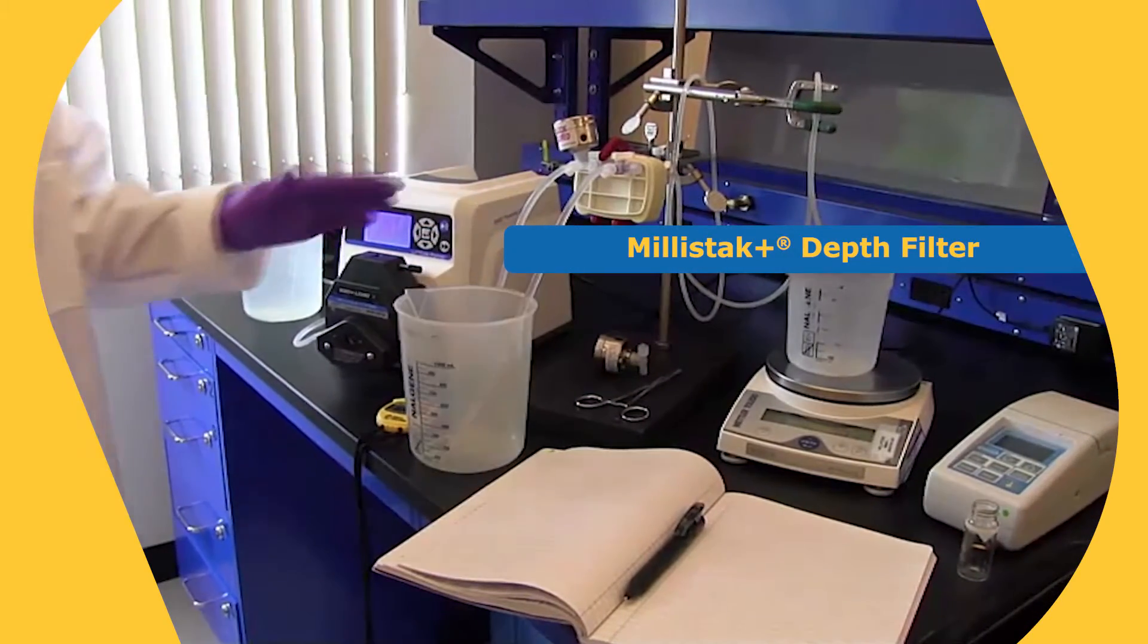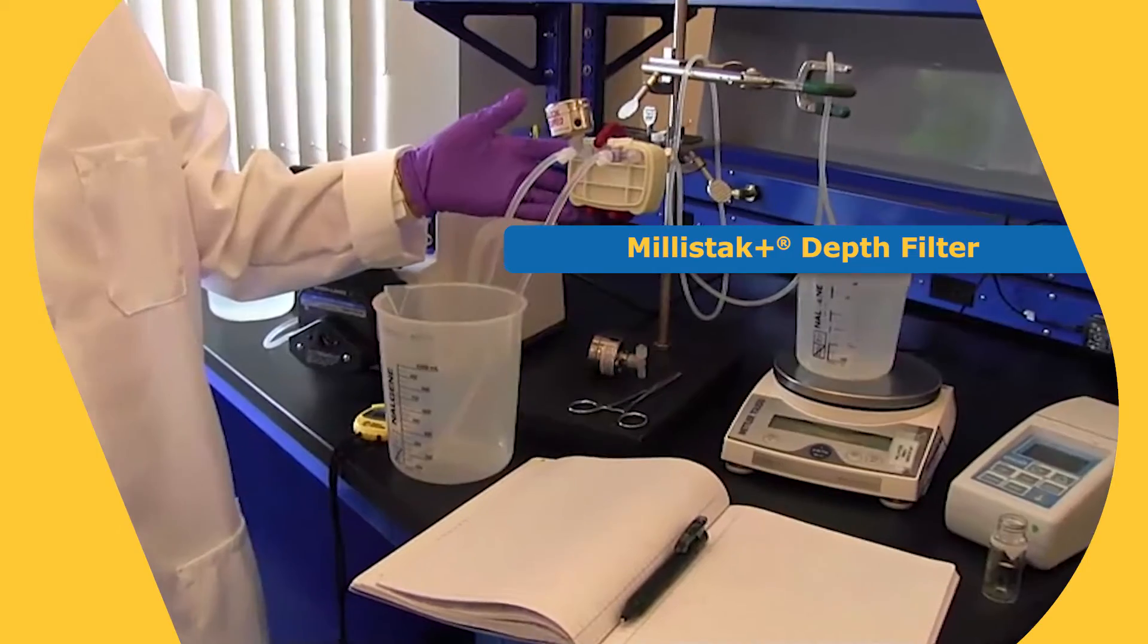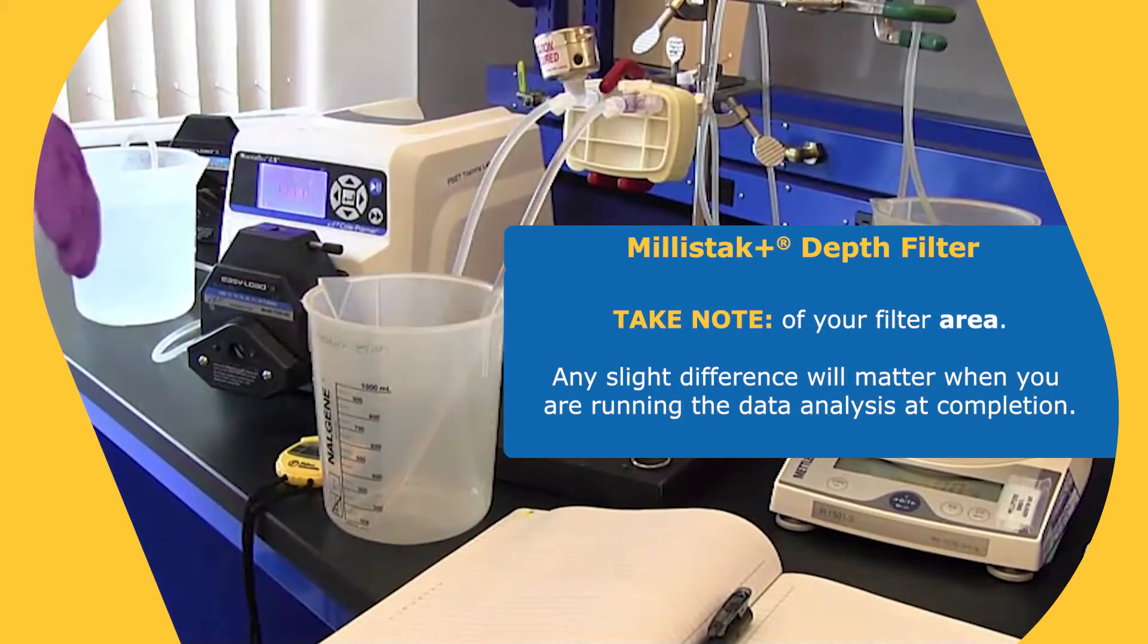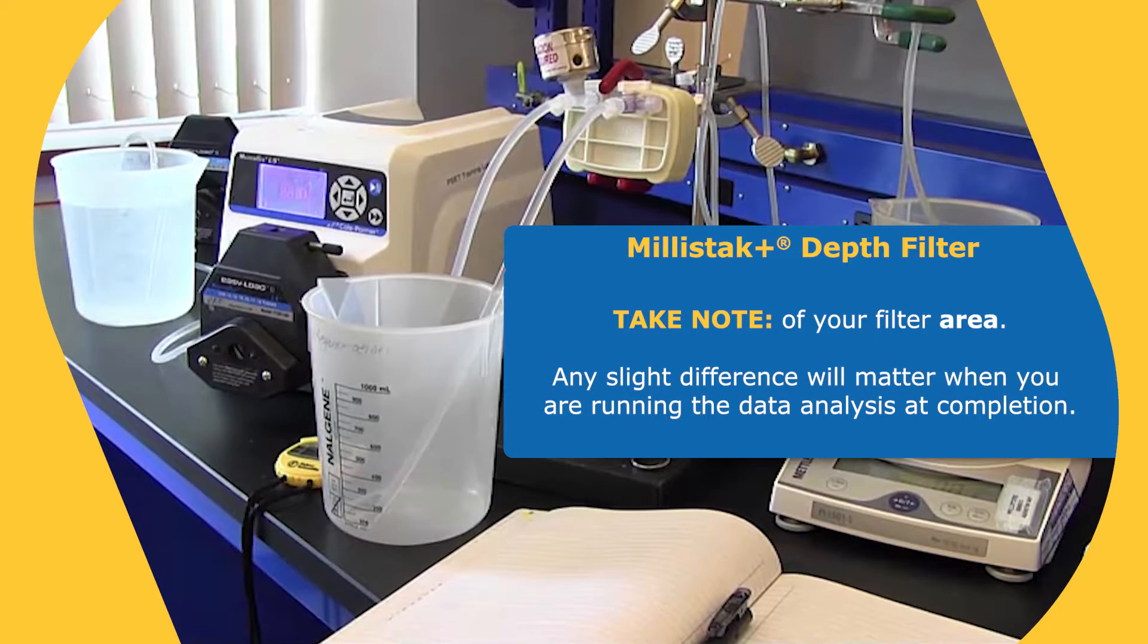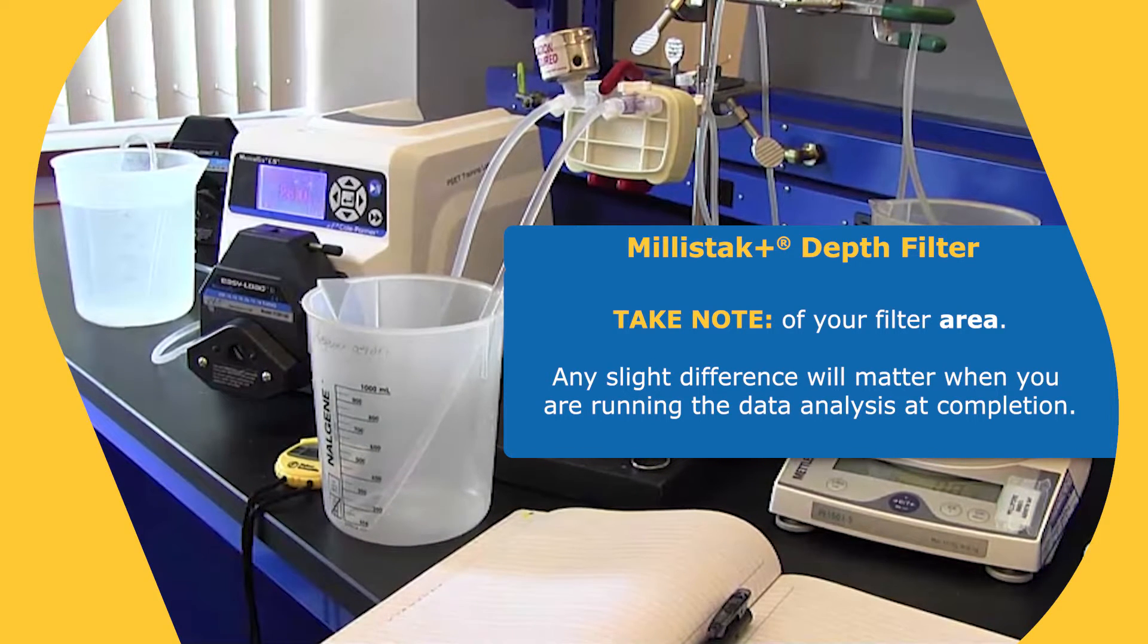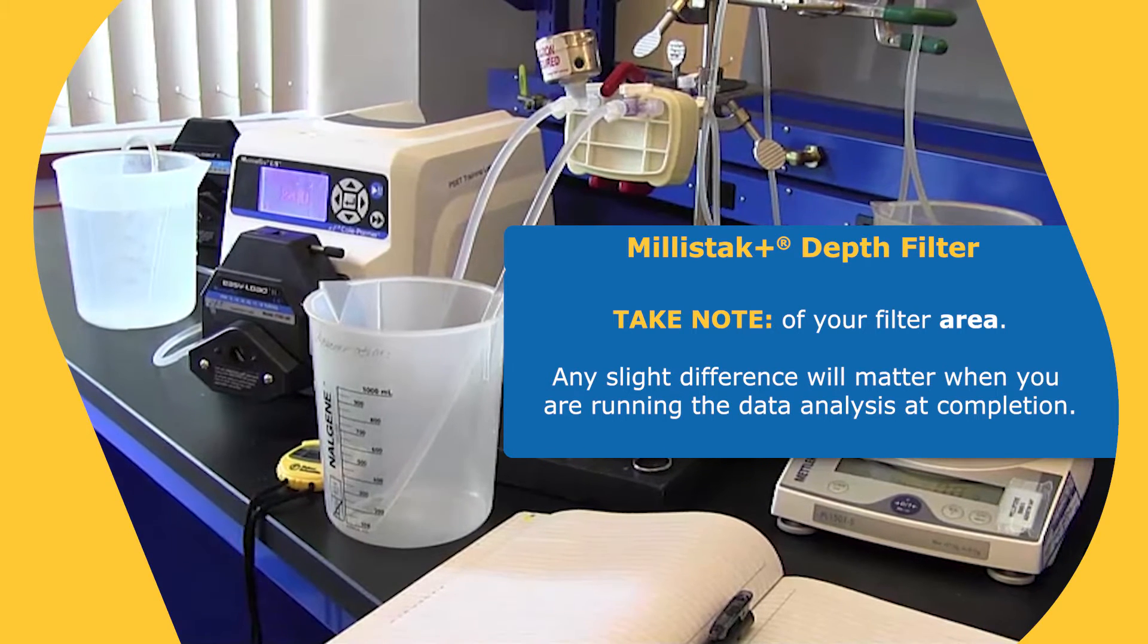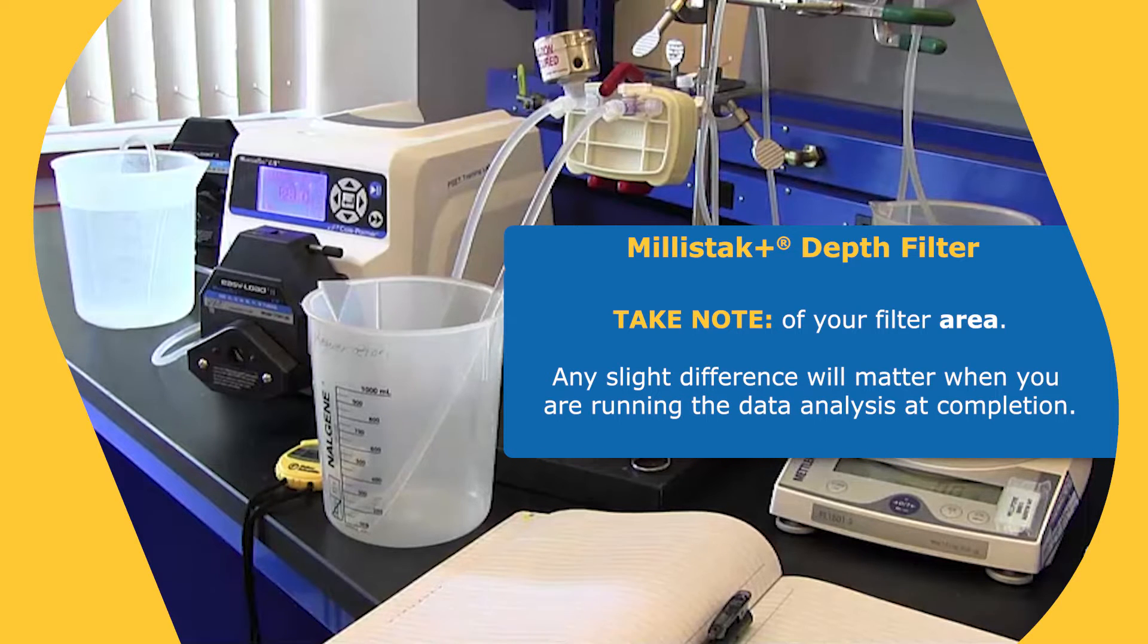We have the Millistack Plus depth filter here. This depth filter is our small scale, and it's 23 square centimeters. I'd just like to point out that as you're running your experiments, I would take note of what the area is in case you are testing a different filter that might have an area of 25 square centimeters or 26 square centimeters. The slight difference there will actually matter when you're doing the data analysis at the end.